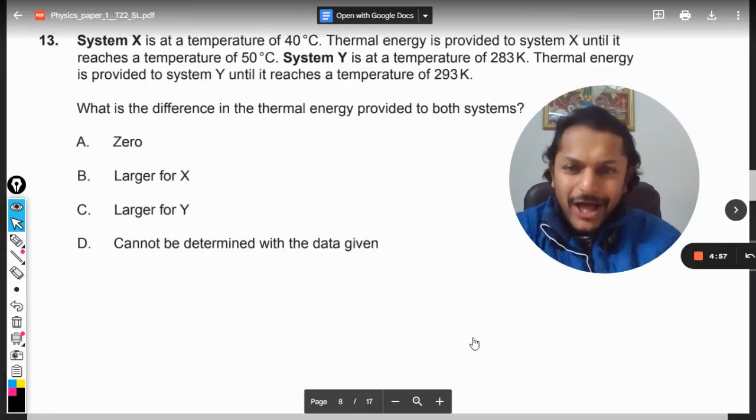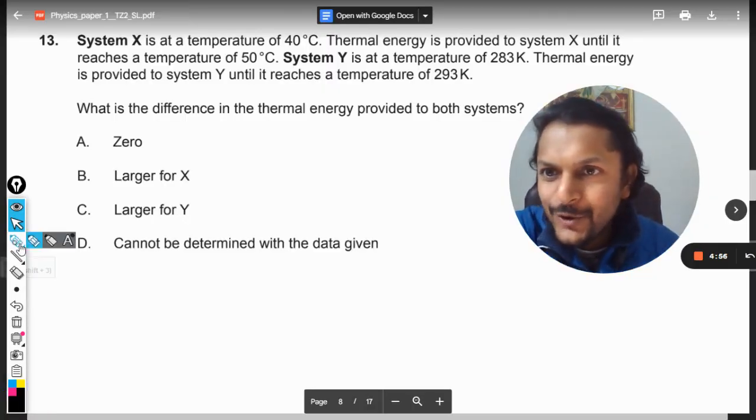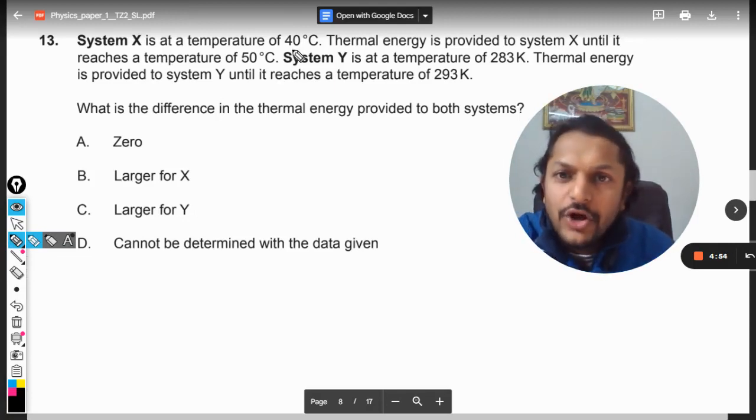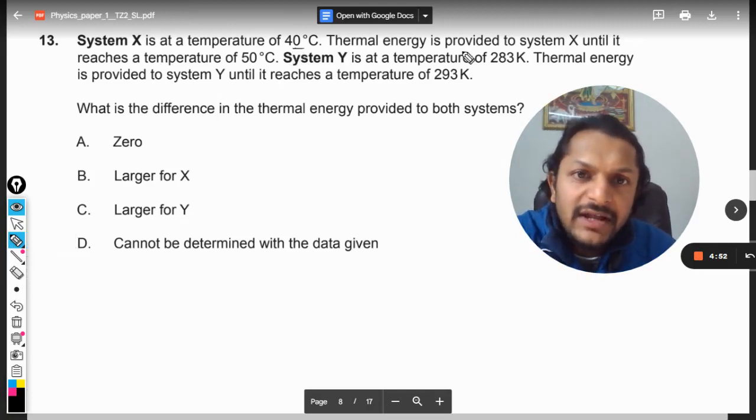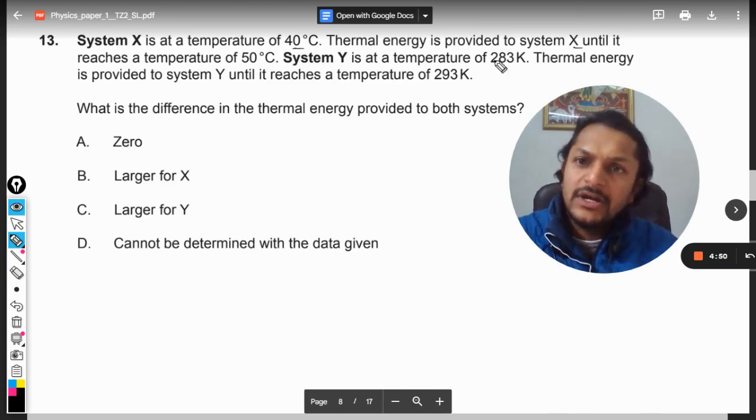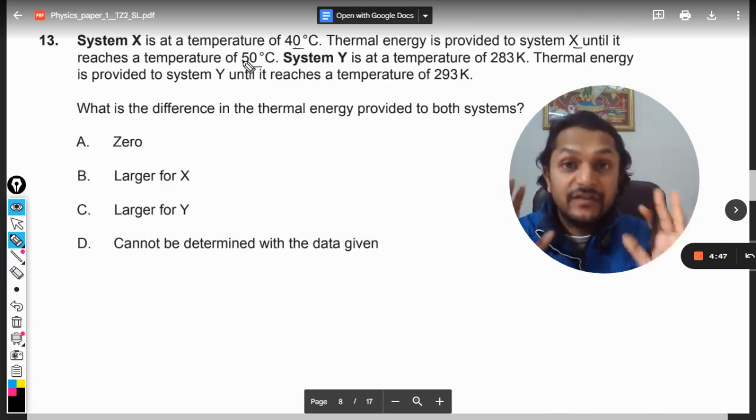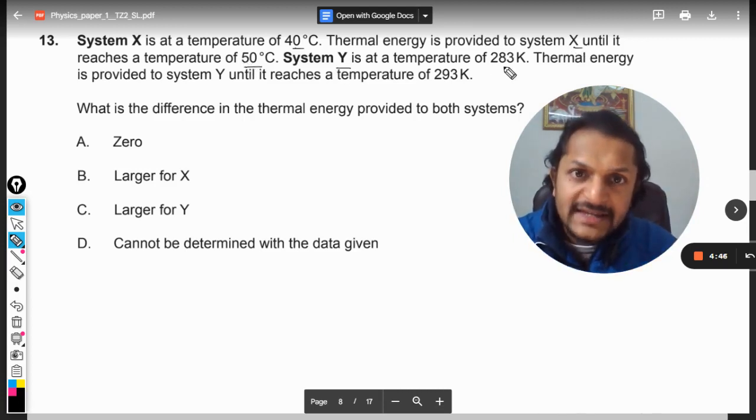Okay dear students, let us see how we are going to do this question. Now, System X has a temperature of 40 degrees C. Thermal energy is provided to the system until its temperature reaches 50 degrees. System Y is at a temperature of 283 Kelvin.